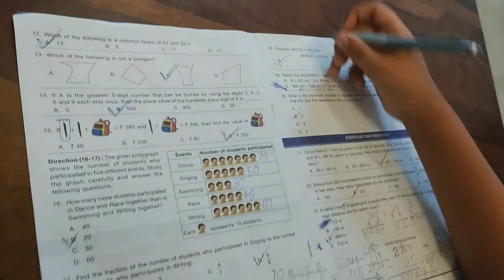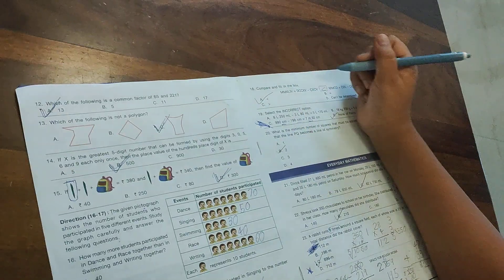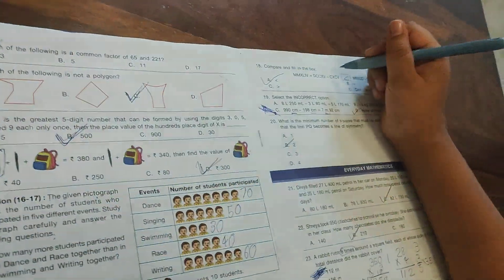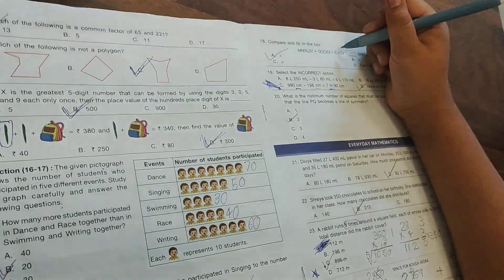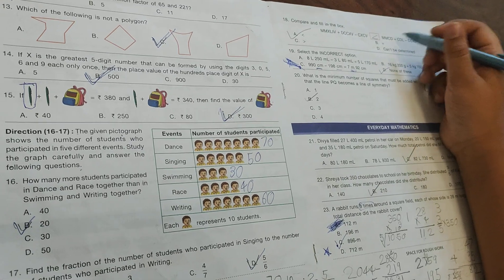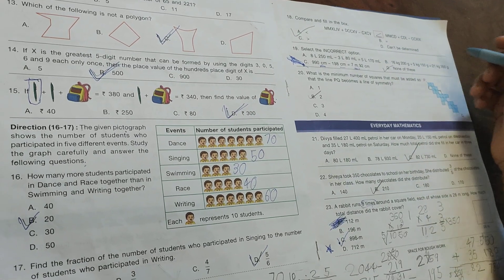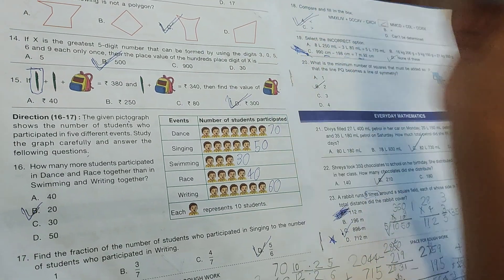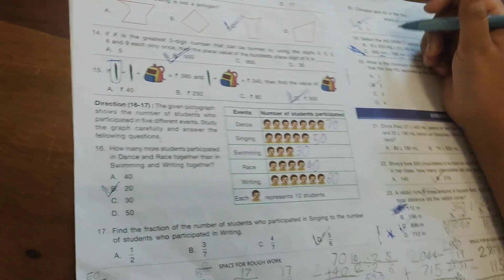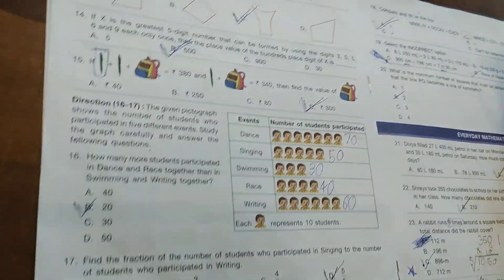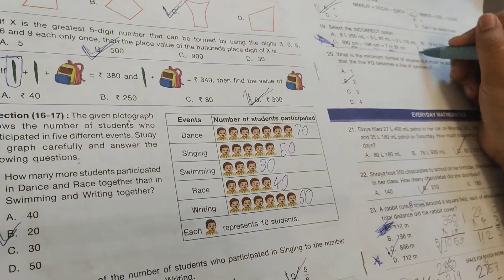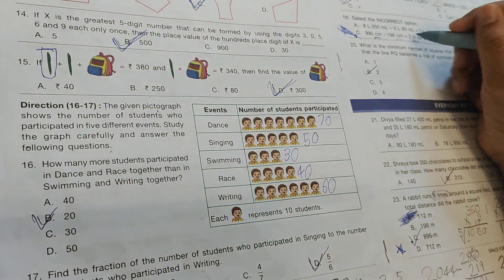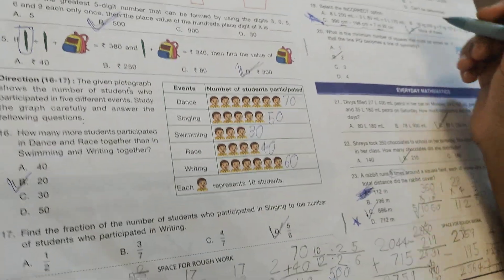Simplify and compare: MXLIV - DCXCV versus MFCD + CDL - CCXIX. The answer is option A, greater than. You need to convert from Roman numerals to normal numbers. Select the incorrect option - the answer is none of these, because all options are correct, including 7 meters 92 centimeters equals 792 centimeters.